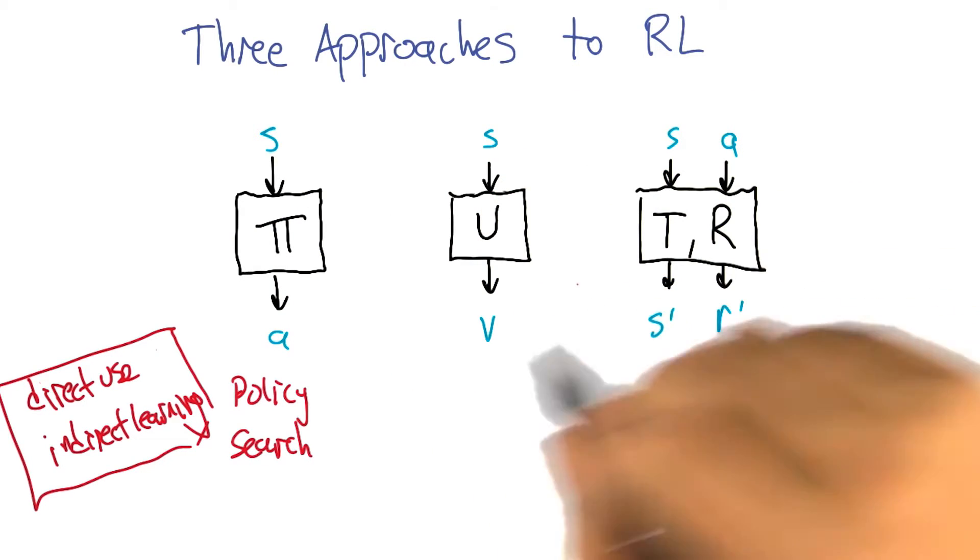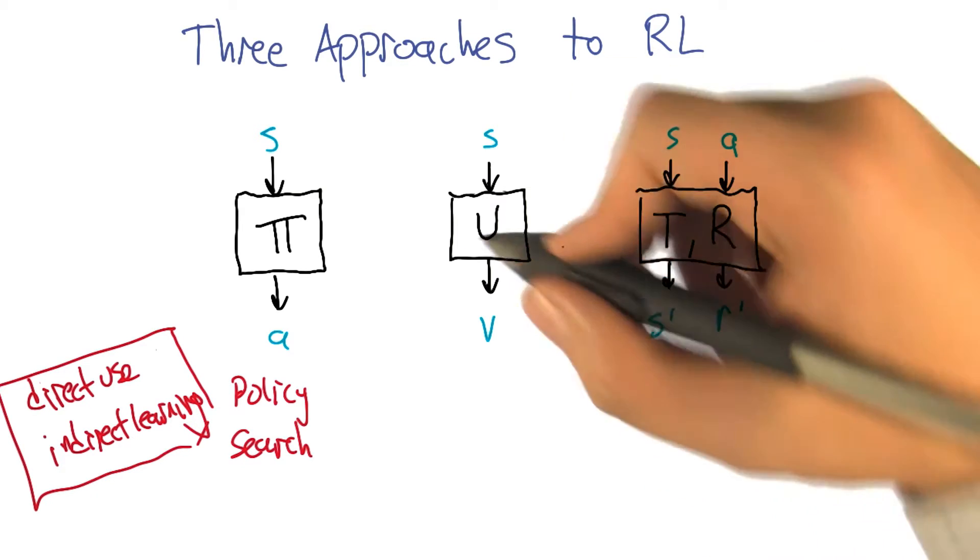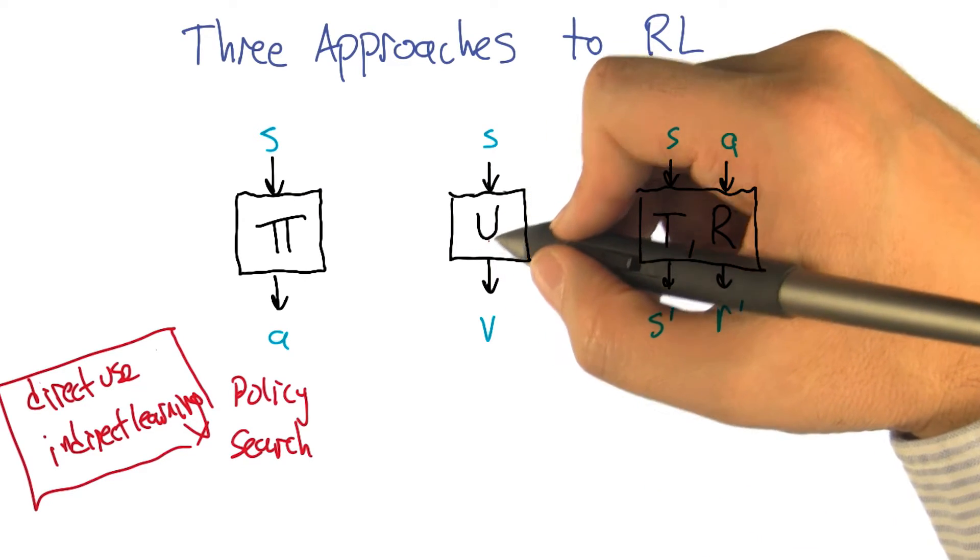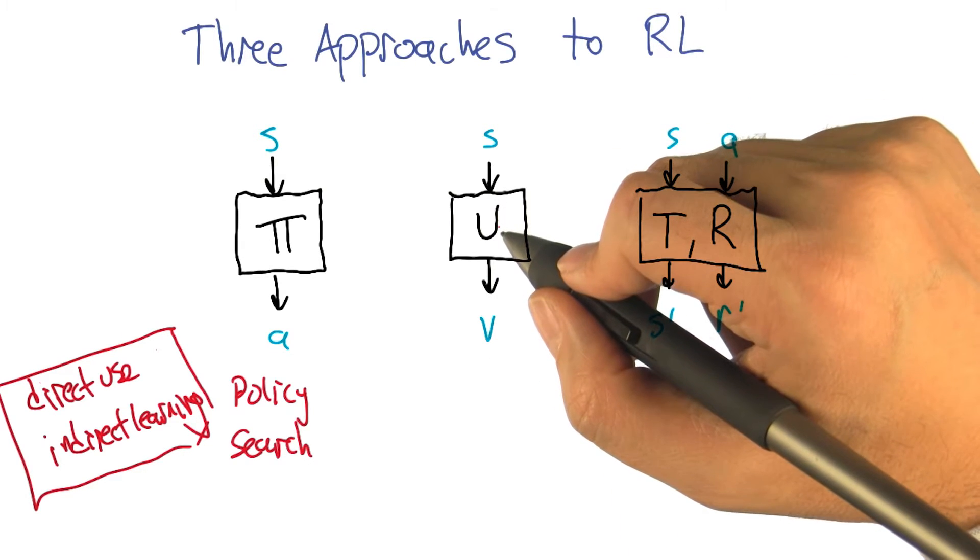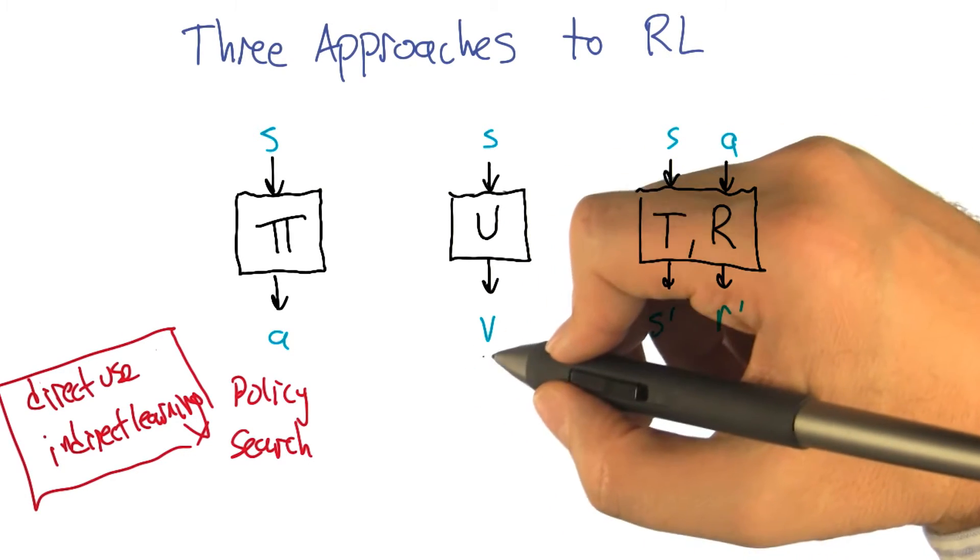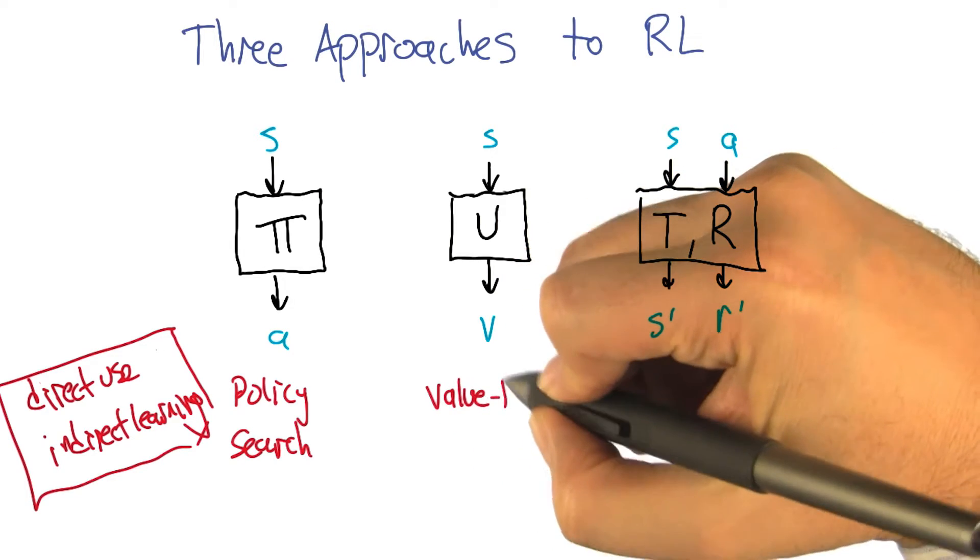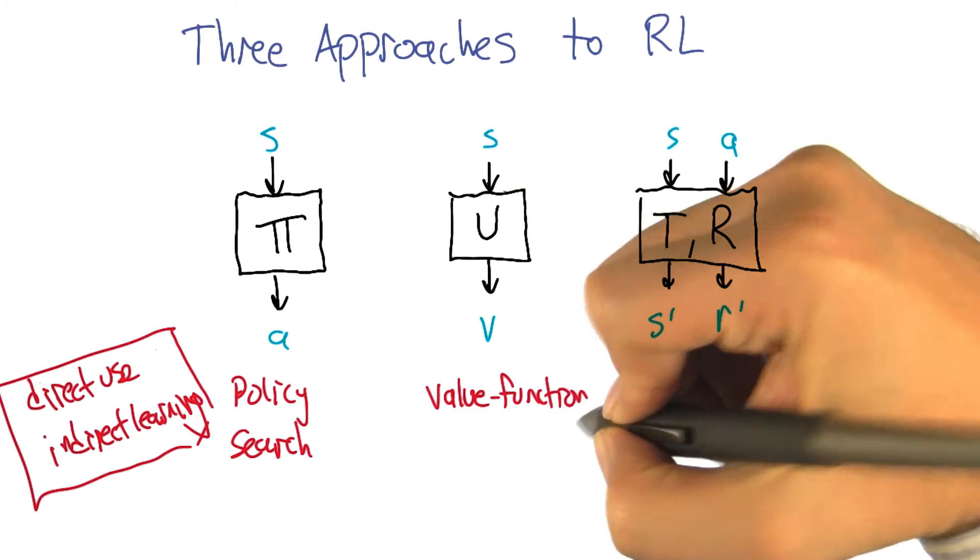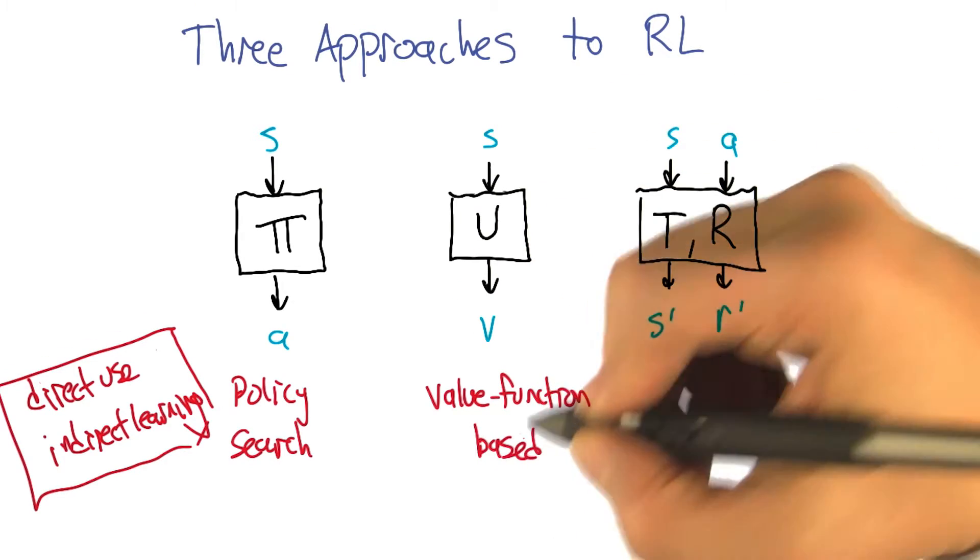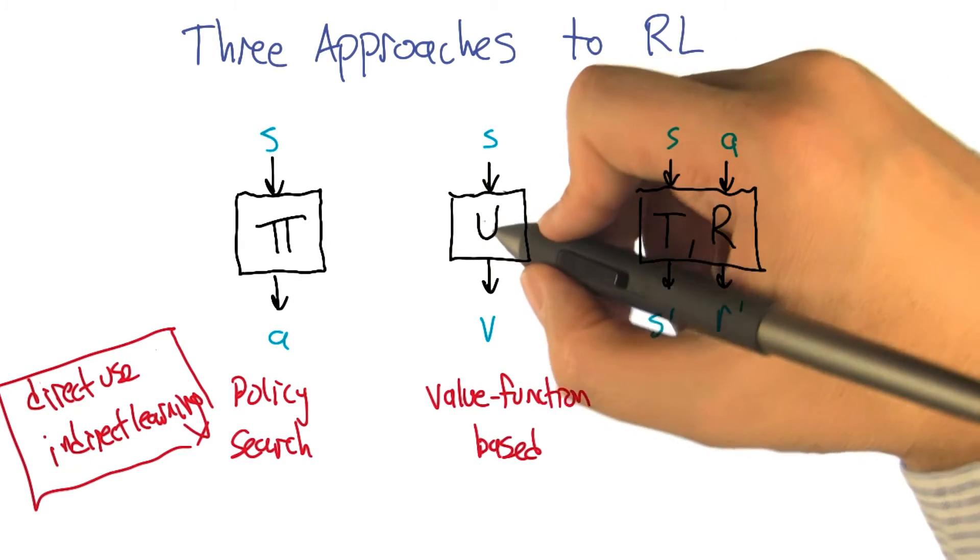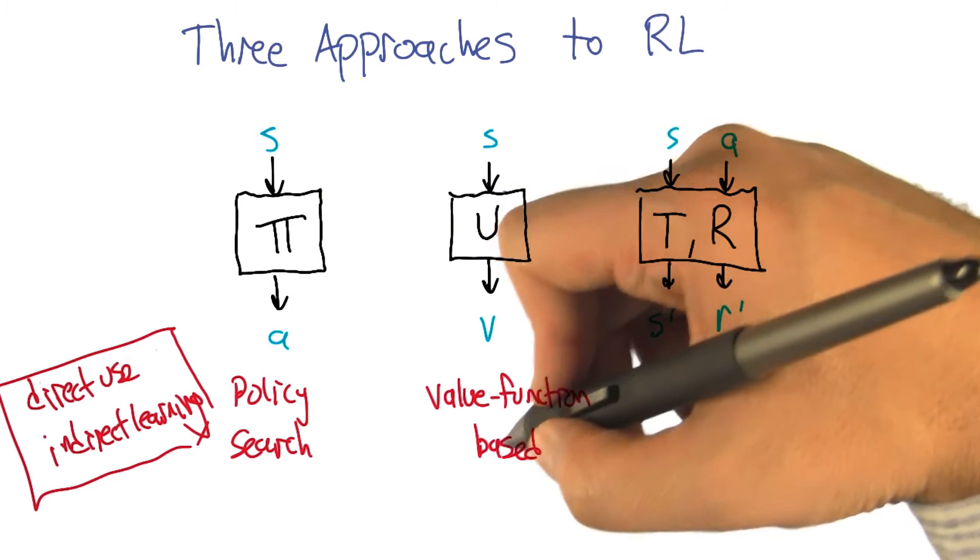But what we're going to do is now consider, maybe that's not the quantity that we want to learn. Let's think about learning this function U, which you had said maps states to values. So what was this guy? U is a utility. Yeah, the true utility of the state. Sometimes I called it the value of the state. So sometimes it's referred to as a value function. And learning methods, reinforcement learning methods that target that as what they're trying to learn directly, are called value function based approaches.